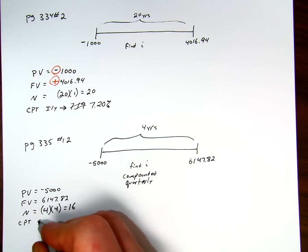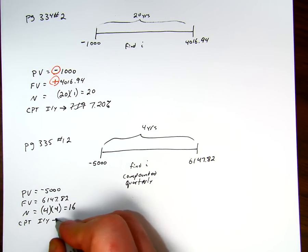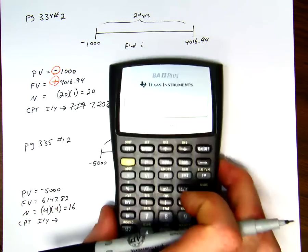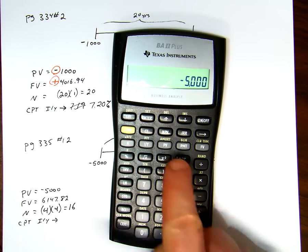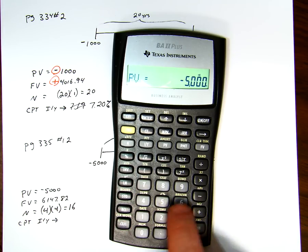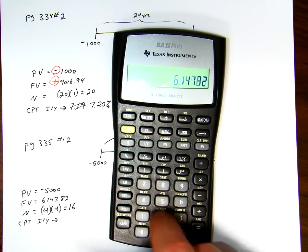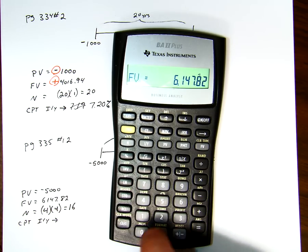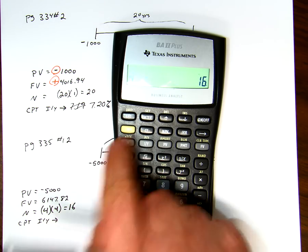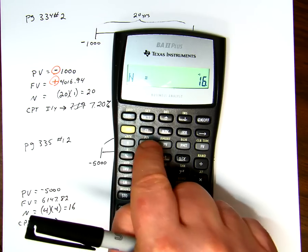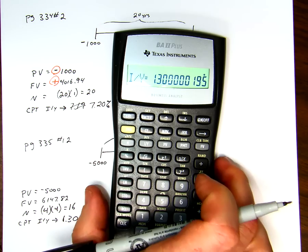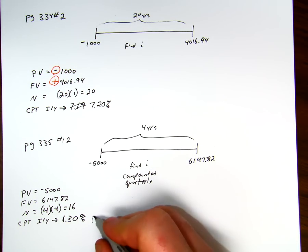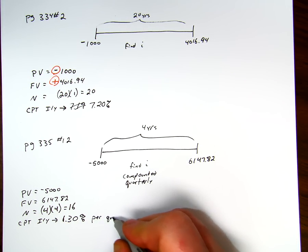Now when we compute i per y, we get a value that is $5,000 negative present value. So we're going to compute i per y. And this comes out as 1.30%. And this is 1.30% per quarter.